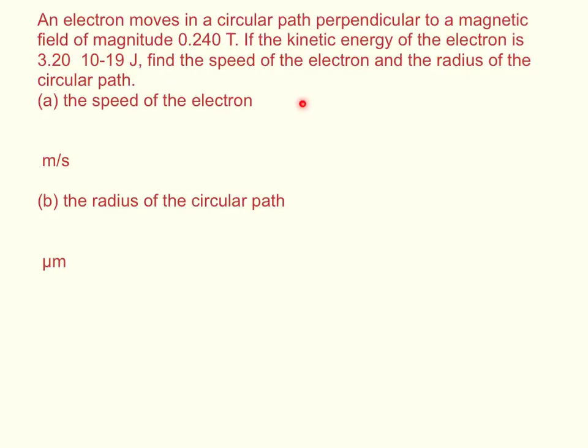We know that the kinetic energy is equal to one half mv squared, so we can solve for v. So v is going to equal the kinetic energy times 2 divided by the mass, to the square root.